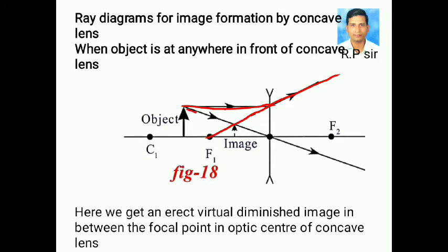And the second ray, the ray which is passing through optic center, is undeviated. Here the two rays intersect and we get the image here. So this is the image.